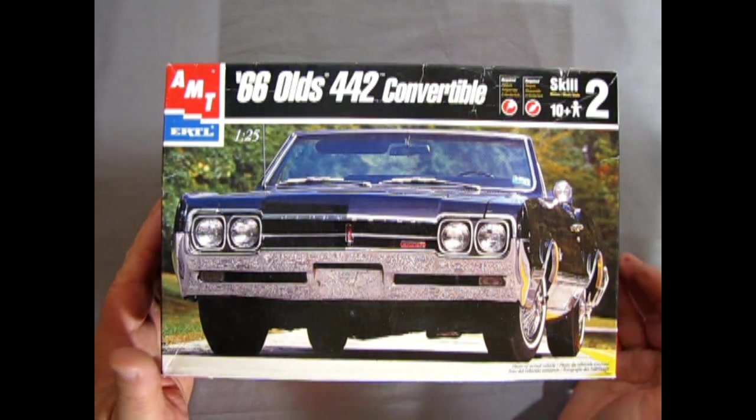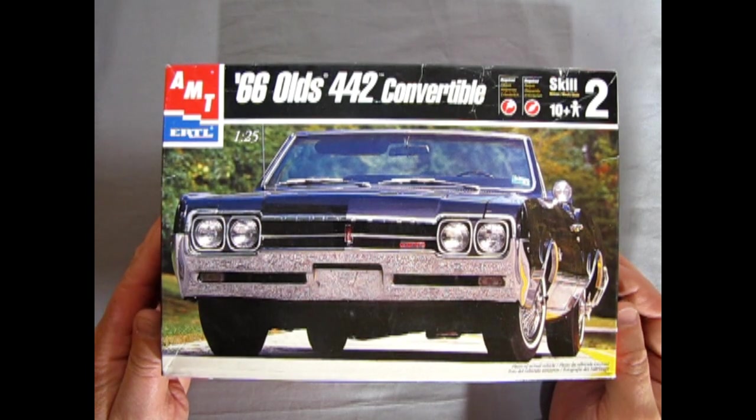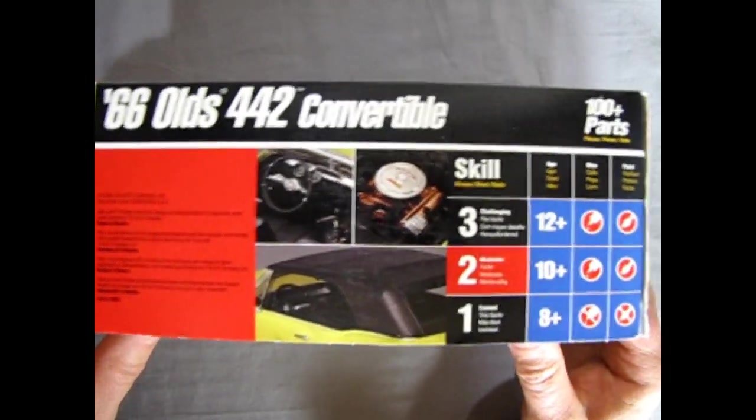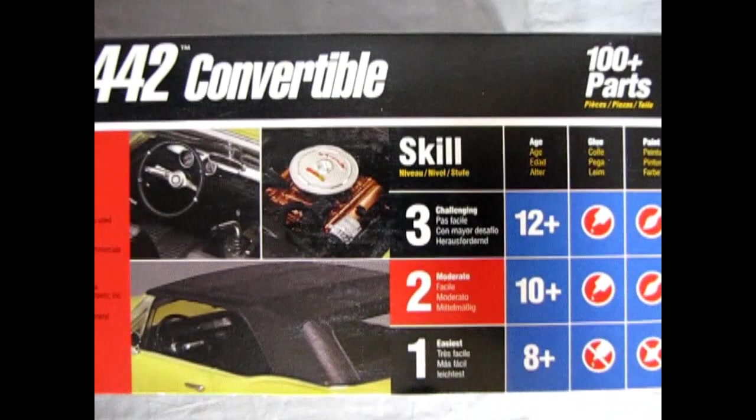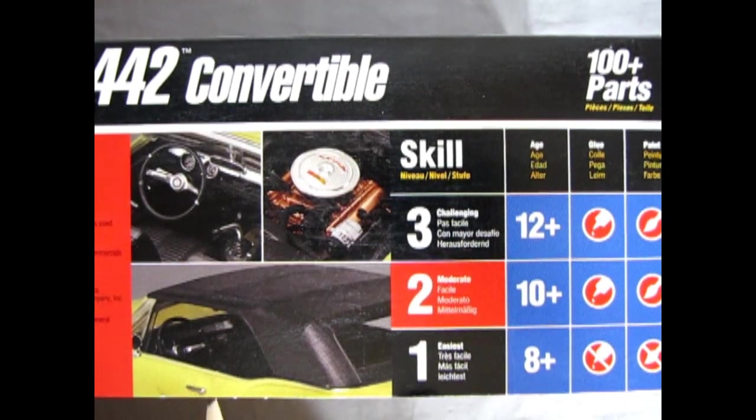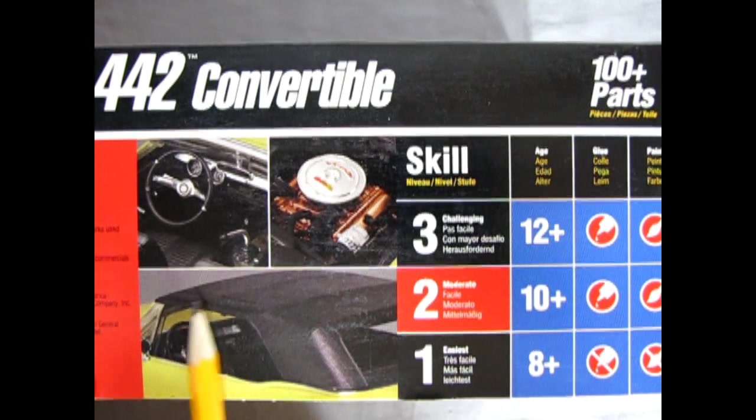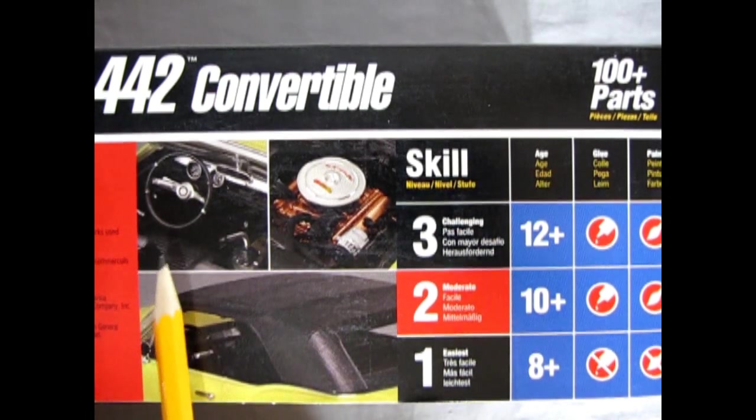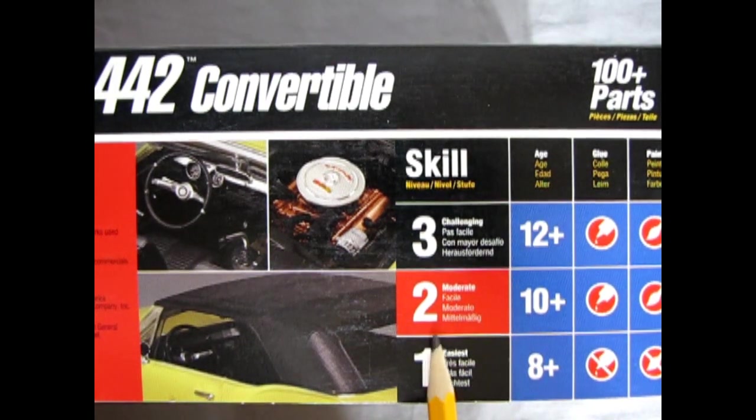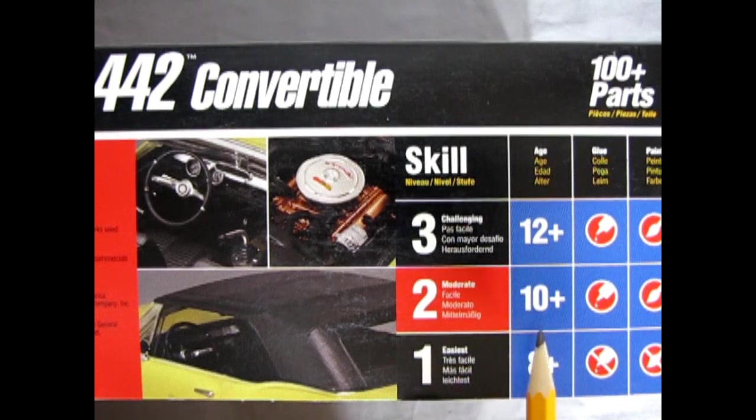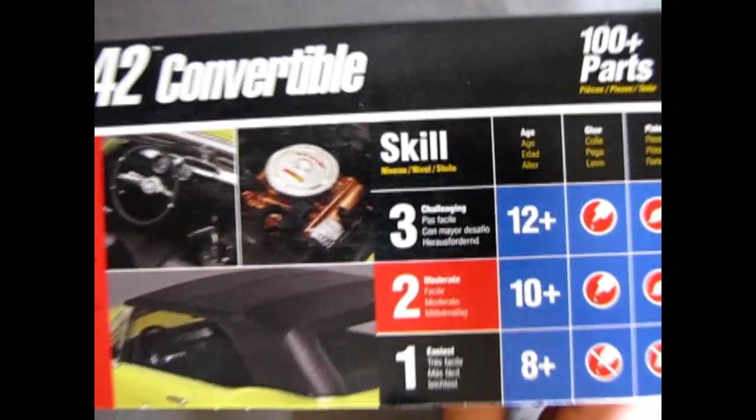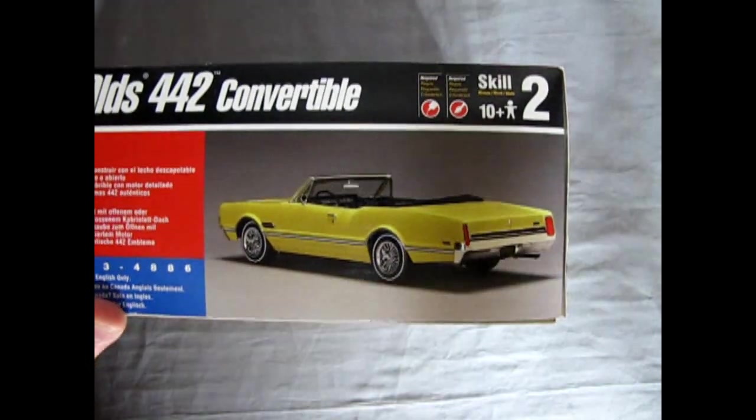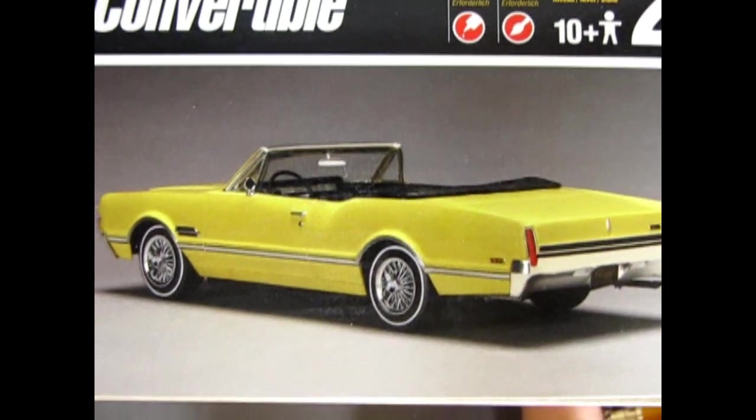Now we're going to take a look at the AMT 1966 Oldsmobile 442 Convertible Kit. This kit came out in 1996 and is all new tooling for the time. A very cool model. If we just move the camera up here you can see that there were a couple of different models that they used. This one was painted yellow, has a black vinyl roof on it or the convertible top up. You got your nice Oldsmobile motor painted in the authentic gold color and of course our interior in here. This is a skill level two kit for ages 10 and up, requires glue and paint.